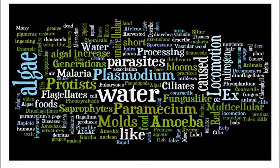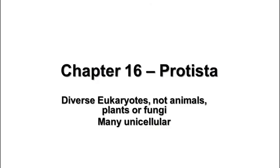This lesson is about Kingdom Protista. When we talked about the kingdoms and learned about classification, we talked about definitions of each one. The definition of Protista is that it's kind of the catch-all place, like the junk drawer in the kitchen — it's where you put everything that doesn't fit someplace else. So the definition of a Protista is a eukaryote that is not an animal, plant, or fungus.